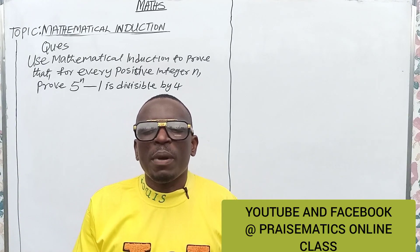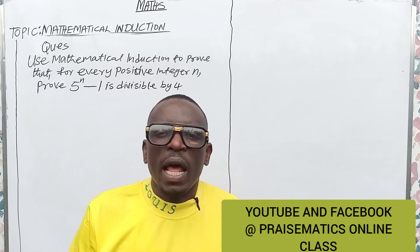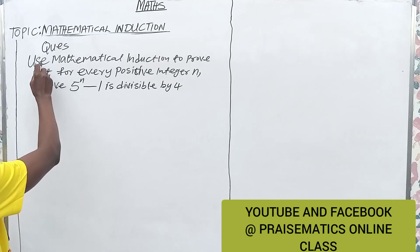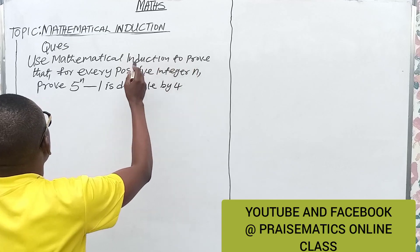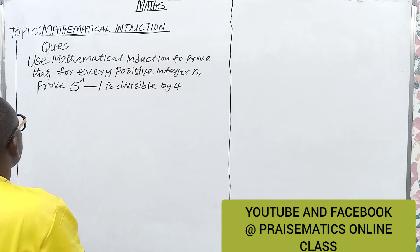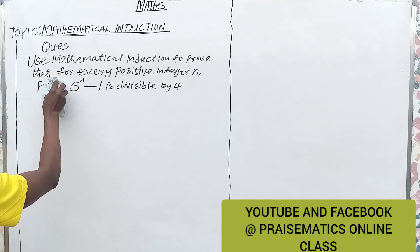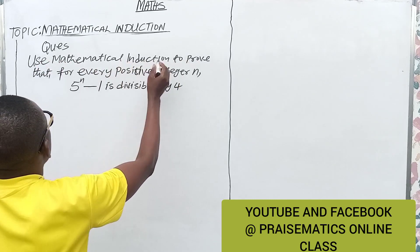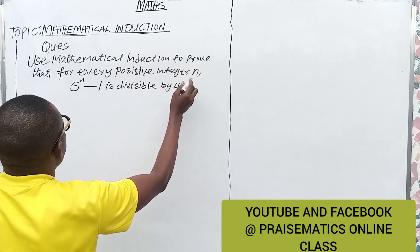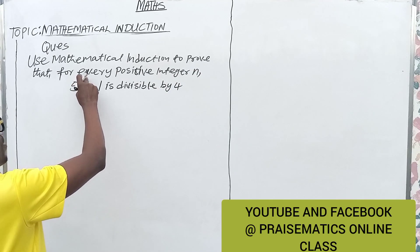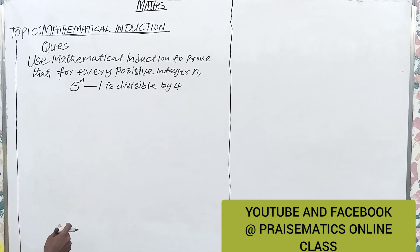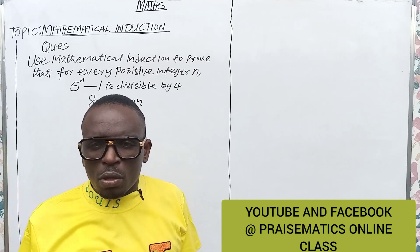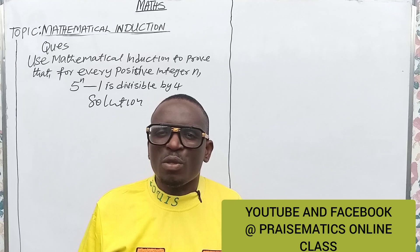Hello friends, welcome to Prismatics Online Class. In today's class we are going to solve questions on the board. The question says: use mathematical induction to prove that for every positive integer n, 5 raised to the power n minus 1 is divisible by 4.